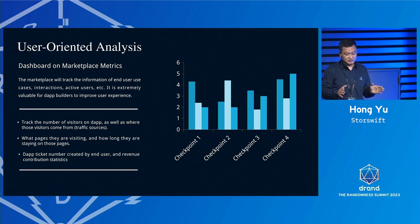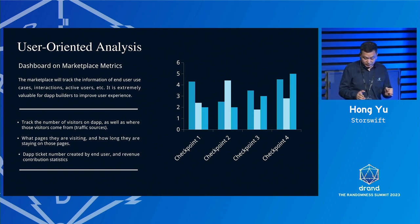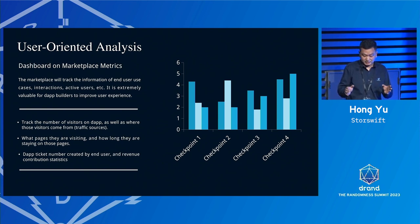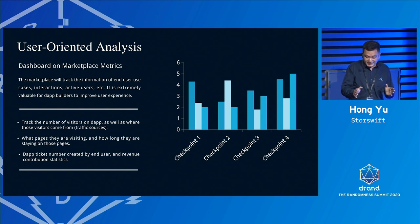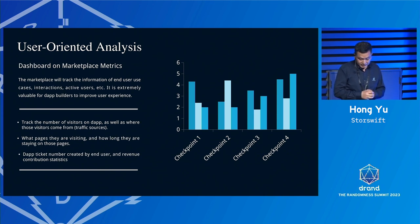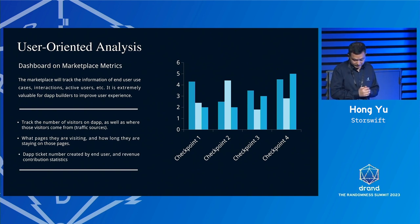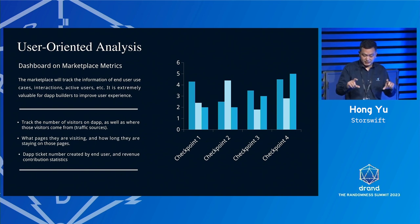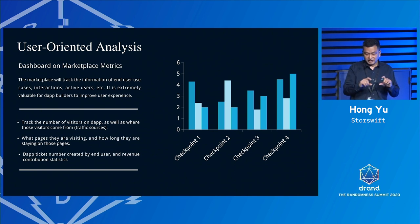Another side is about end users. The platform can track the number of visitors to the DApp, where those visitors come from, what pages they are visiting, and how long they are staying. DApp ticks represent interactions created by end users and revenue contribution statistics. This information is very important to the DApp builder for improving user experience of their product.